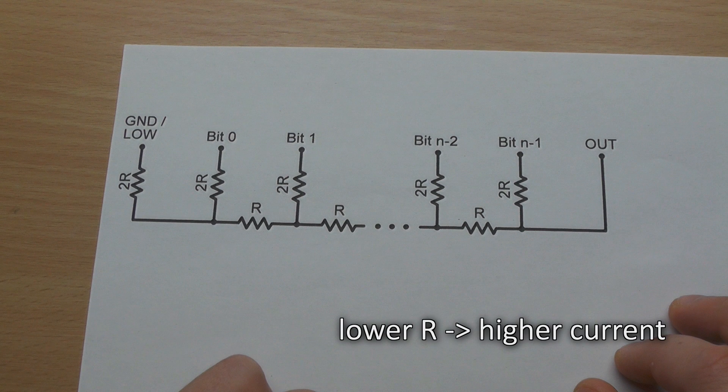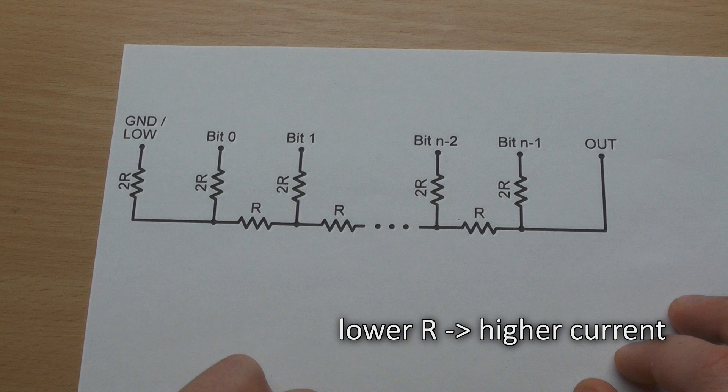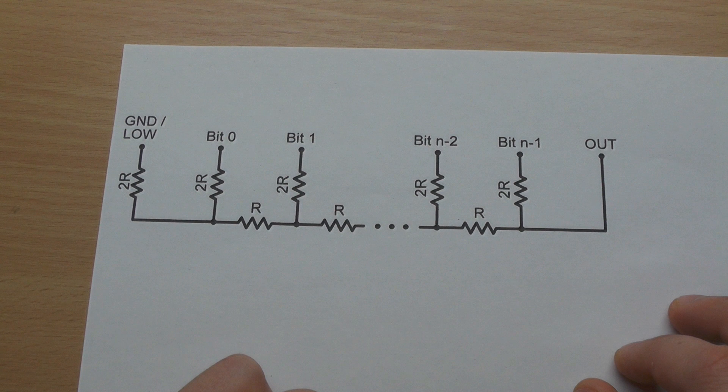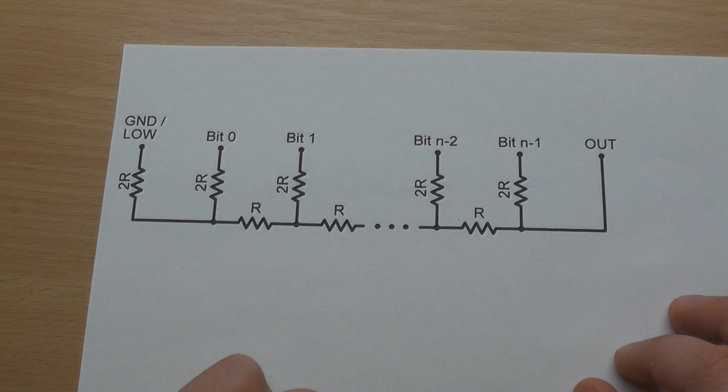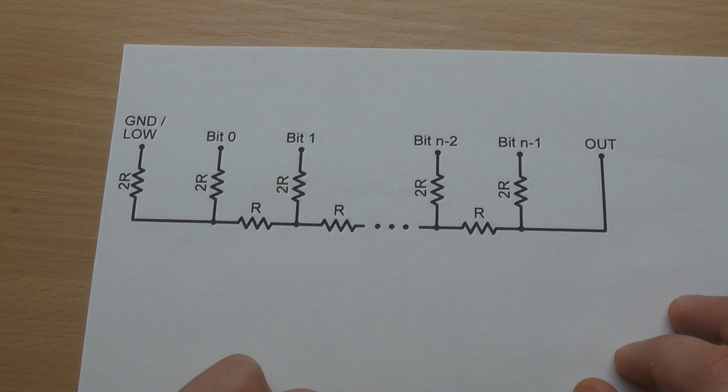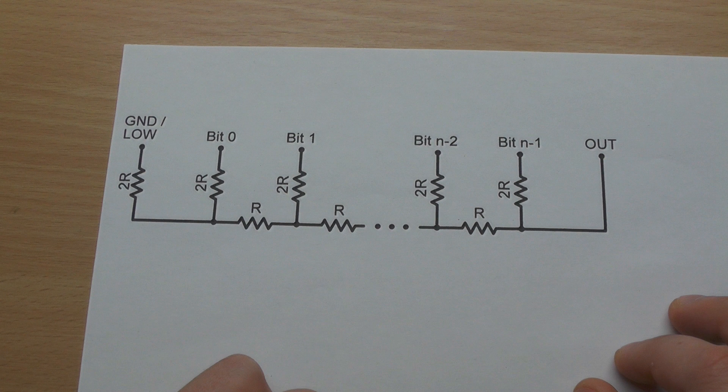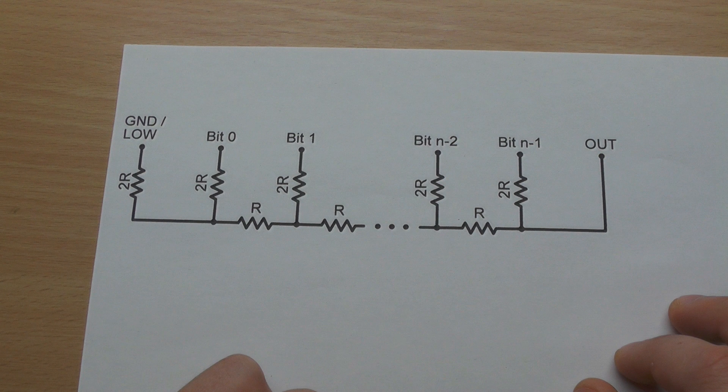The lower the value of R is, the higher the current you get out of it. But what's the minimum resistance we can take? One thing to consider is that whenever your bits are not all zero, you have your high bit connected via this resistor ladder somehow to the ground. So it wastes some energy.